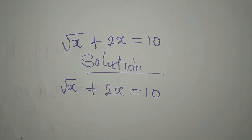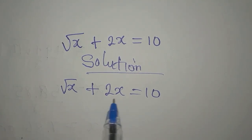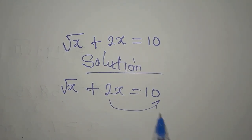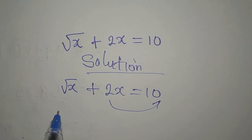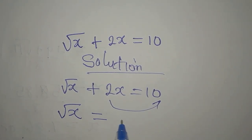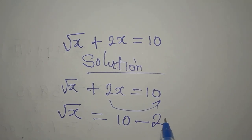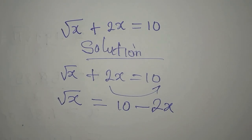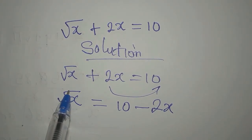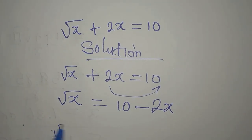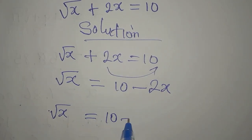Let's watch the steps I'm going to take. I'm going to move 2x to the other side, so we have root x remaining on the left, and it's equal to 10 minus 2x. The positive 2x becomes negative when moved to the right side.